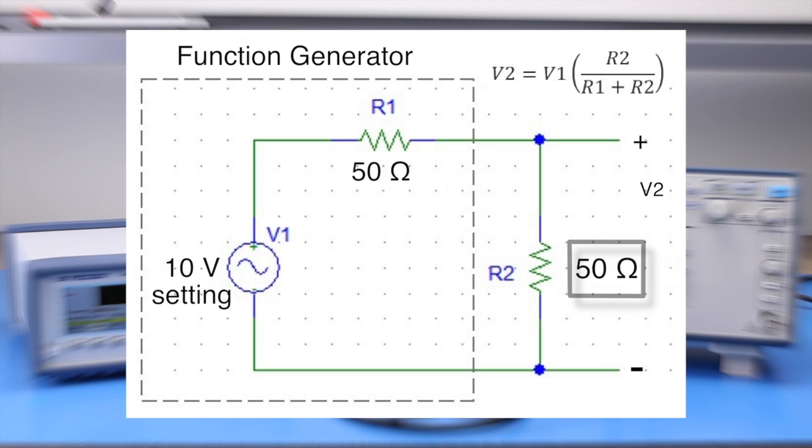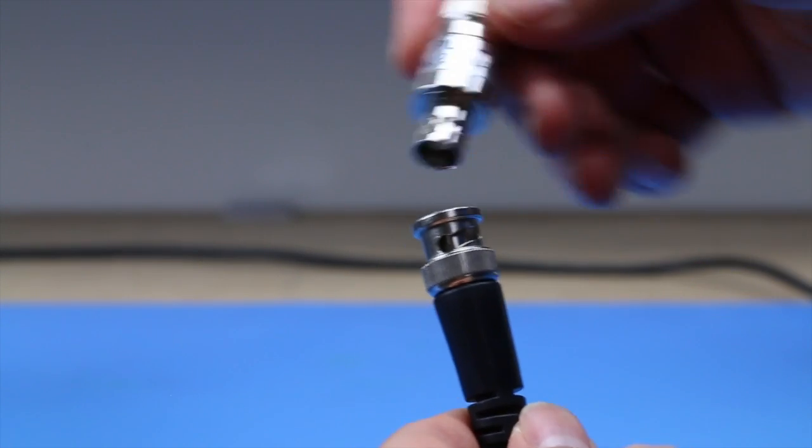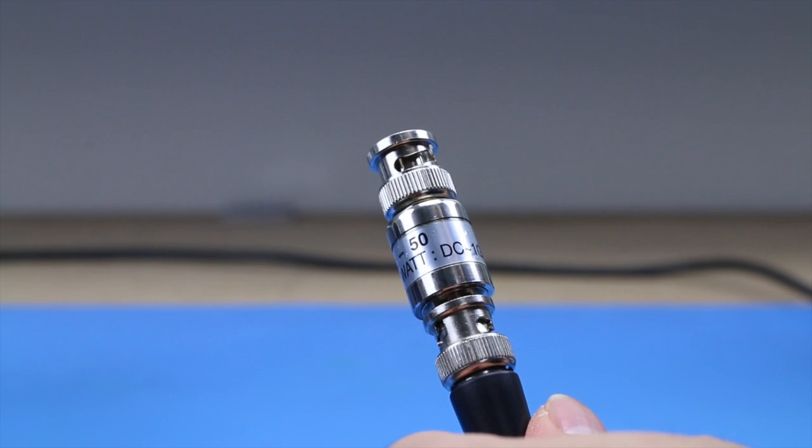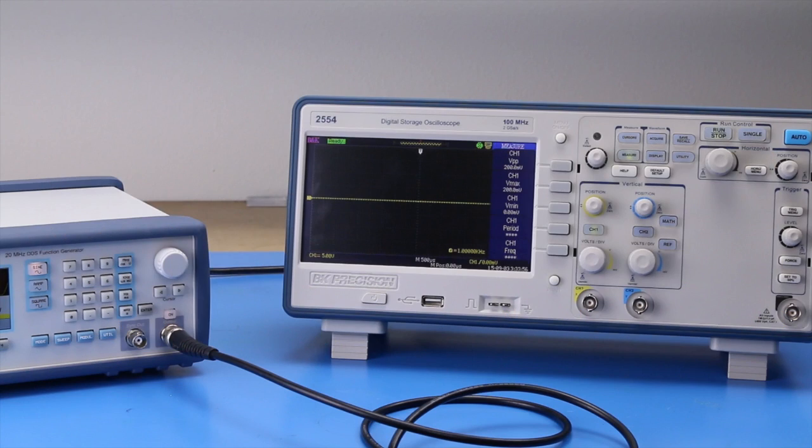Therefore, setting the scope to the 50 ohm impedance setting or terminating the output with the proper feed-through terminator will allow you to measure the same voltage as the generator's setting.